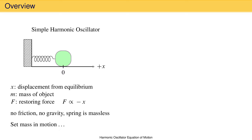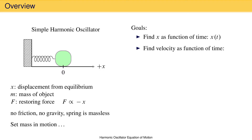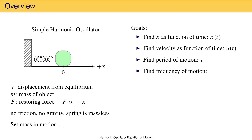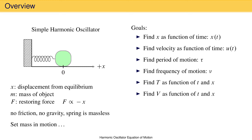We set the mass in motion, and then we are going to find the displacement of the mass from equilibrium as a function of time, called x(t). We will also find velocity as a function of time, u(t), the period of motion tau — the time for one complete cycle — and the frequency of motion nu, as well as the kinetic energy and potential energy as functions of both time and displacement.